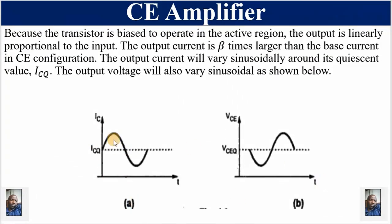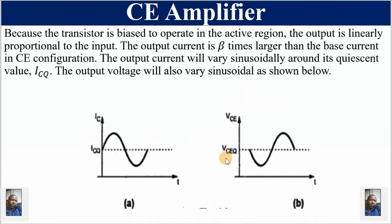We have two output signals — A: the collector current, where the dotted line is the quiescent collector current; and B: the output voltage which is the collector-to-emitter voltage, where the dotted line is the quiescent collector-to-emitter voltage. The AC collector current superimposes itself on the quiescent collector current, and the same applies to the collector-to-emitter voltage. The output current is beta times the base current — beta times the input current — for common emitter configuration, and it will vary sinusoidally around its quiescent collector current.